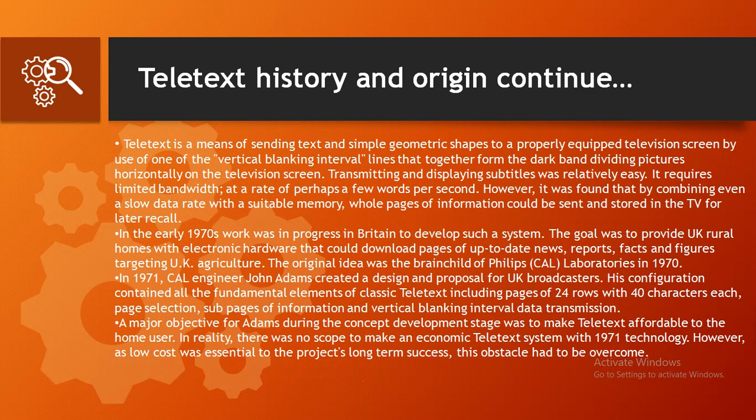Teletext is a means of sending text and simple geometric shapes to a properly equipped television screen by use of one of the vertical blanking interval lines that together form the dark band dividing pictures horizontally on the screen. Transmitting and displaying subtitles was relatively easy, requiring limited bandwidth at a rate of perhaps a few words per second. However, it was found that by combining even a slow data rate with suitable memory, whole pages of information could be sent and stored in a TV for later recall. In the early 1970s, work was in progress in Britain to develop such a system.